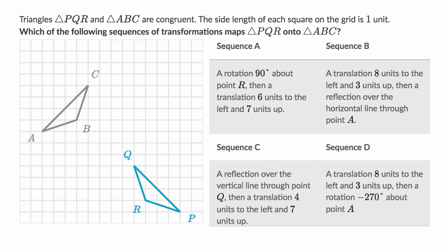All right, now let's do this together. Let's first think about sequence A. We're starting with triangle PQR. First it says a rotation 90 degrees about point R, so let's do that. If we rotate this 90 degrees, one way to think about it is a line like that is then going to be like that. R is going to stay where it is since you're rotating about it, but P is now going to be right over here. To go from R to P, we went down one and three to the right. Now when you do the rotation, you're going to go to the right one and then up three. So P is going to be there — that's the rotation.